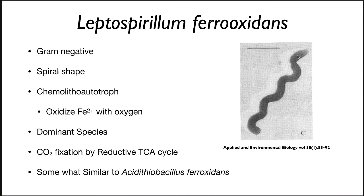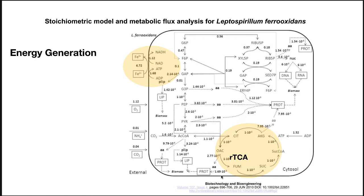Leptospirillum ferroxidans is a gram-negative spiral-shaped organism — a chemo-litho autotroph that oxidizes iron with oxygen. It is the dominant species, and its CO2 fixation is by the reduced TCA cycle. It is somewhat similar to Acidithiobacillus ferroxidans. They have been able to isolate this organism and sequence its entire DNA, and as discussed in module 8, they've predicted the functions of all the proteins, put them into pathways, and made estimates about what it can do.